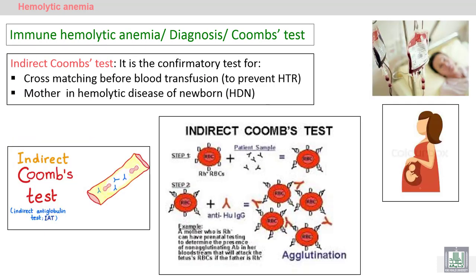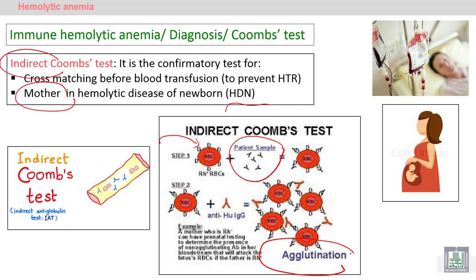For the mother, the antibodies are free in the plasma. We have to add red blood cells from outside to the plasma of the mother, then add the Coombs or antiglobulin reagent to detect the antibodies coating those red blood cells. The reaction will be agglutination — approximation of the cells together. This is the indirect antiglobulin test, used to diagnose hemolytic disease of the newborn by testing the mother.